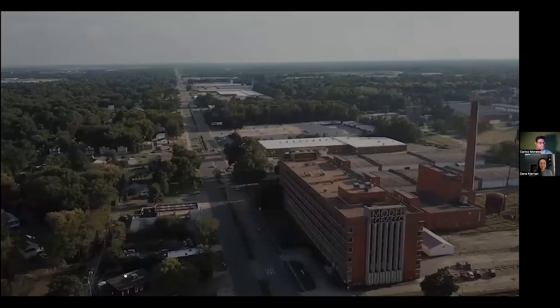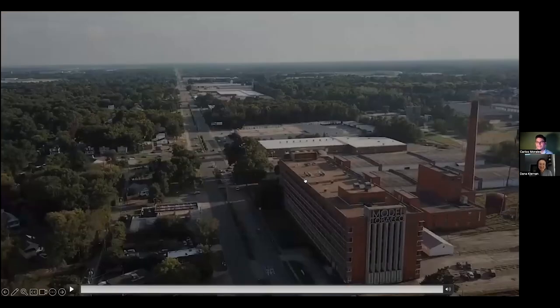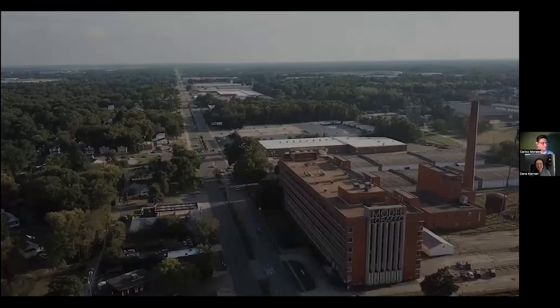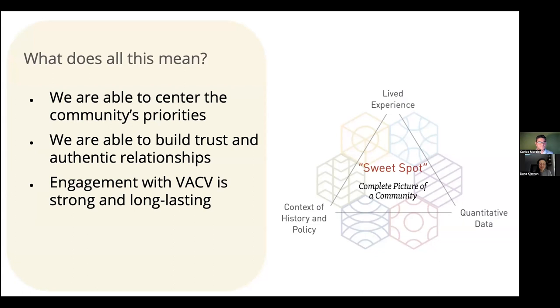So gradually the neighborhood became virtually all Black. What really our data philosophy and our data sweet spot means for us is that we're able to center the community's priorities. We're able to have a really complete picture of a community, build trust and authentic relationships with folks, and the engagement with Virginia Community Voice is strong.